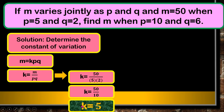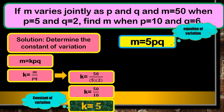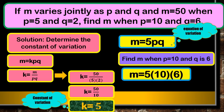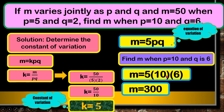Our constant of variation is 5. We can now write the equation of variation: M equals 5 times P times Q. Next, find M when P is 10 and Q is 6. Substitute into the equation: M equals 5 times 10 times 6. Multiply 6 times 10 to get 60, then 60 times 5 equals 300. Therefore, M equals 300.